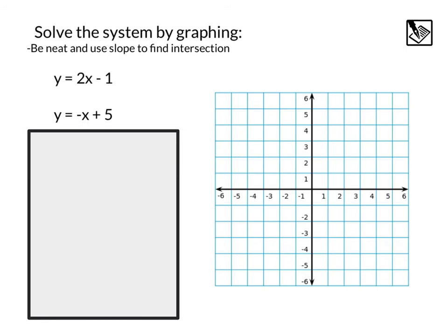The first method we're going to look at to solve a system is by graphing. It's important to look for the point of intersection — be neat and use the slope to find more than one point. We'll go ahead and graph the first line in red and the second line in blue on the same coordinate plane.